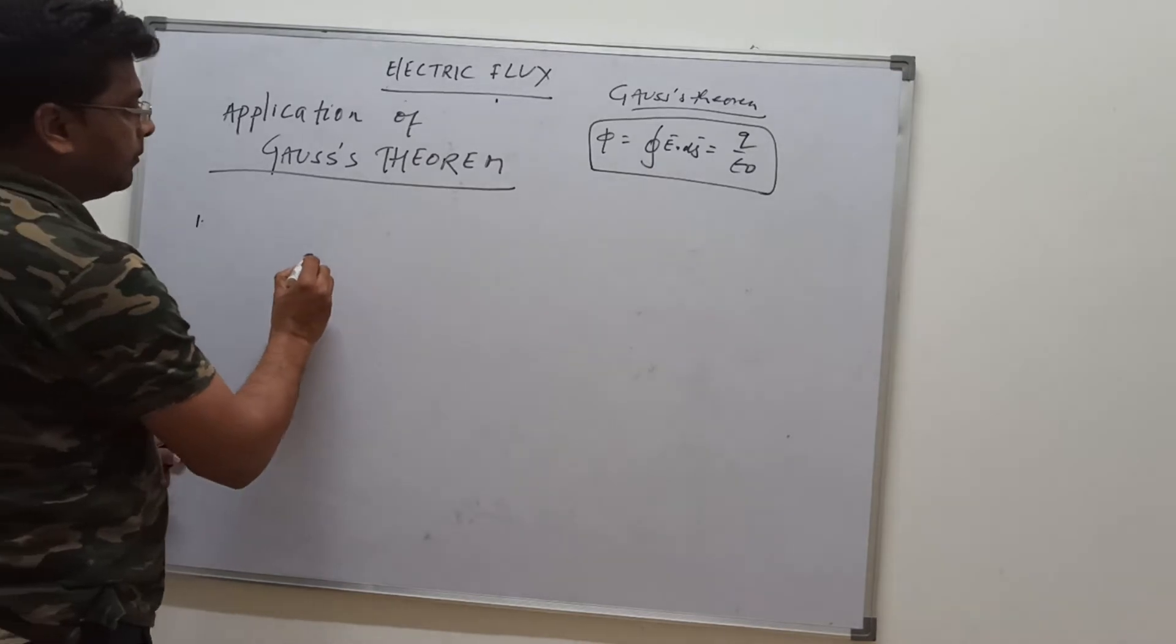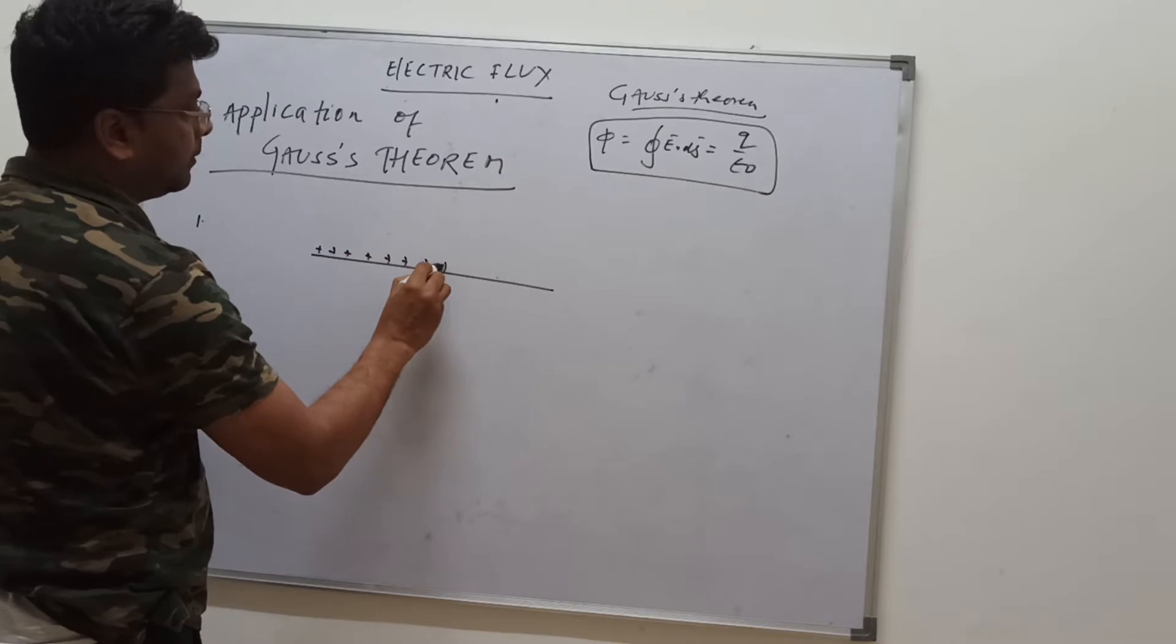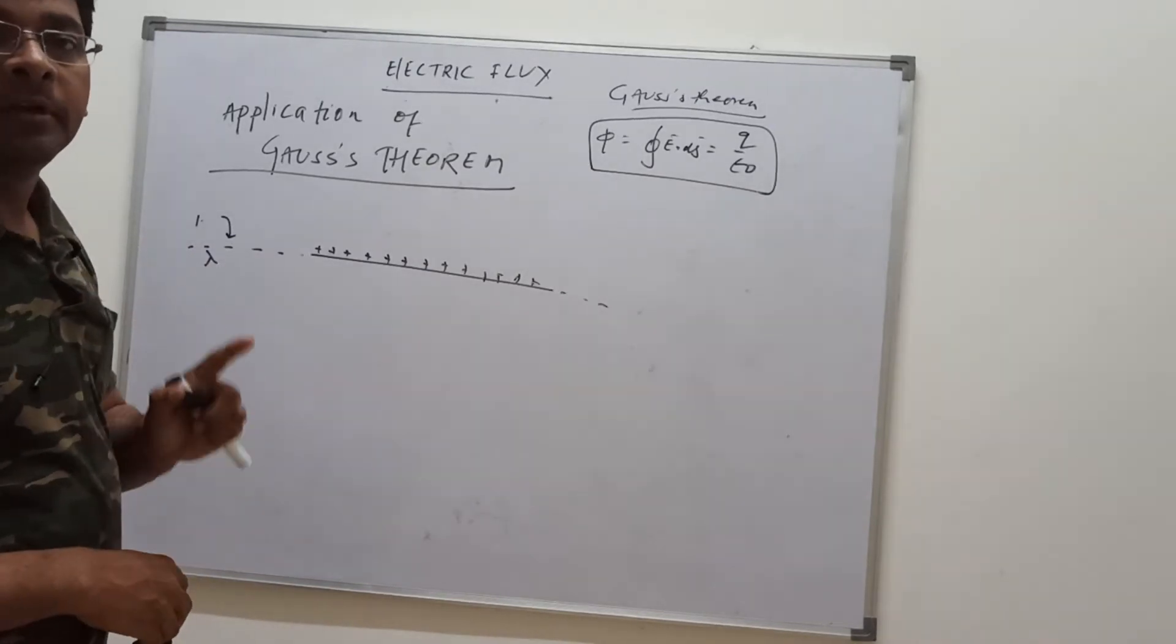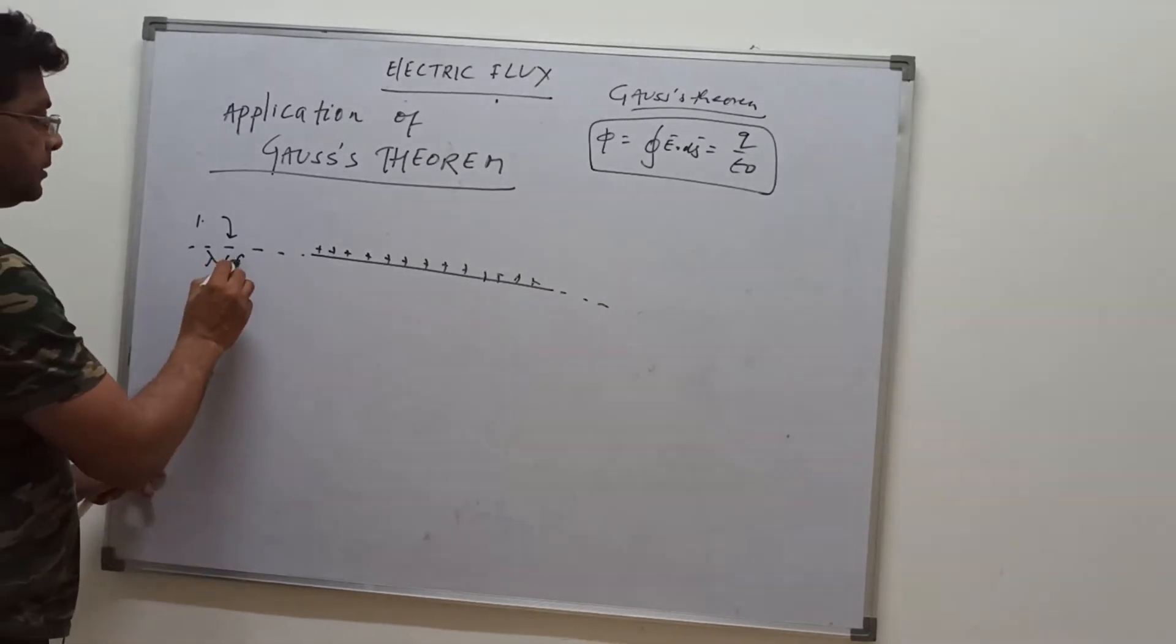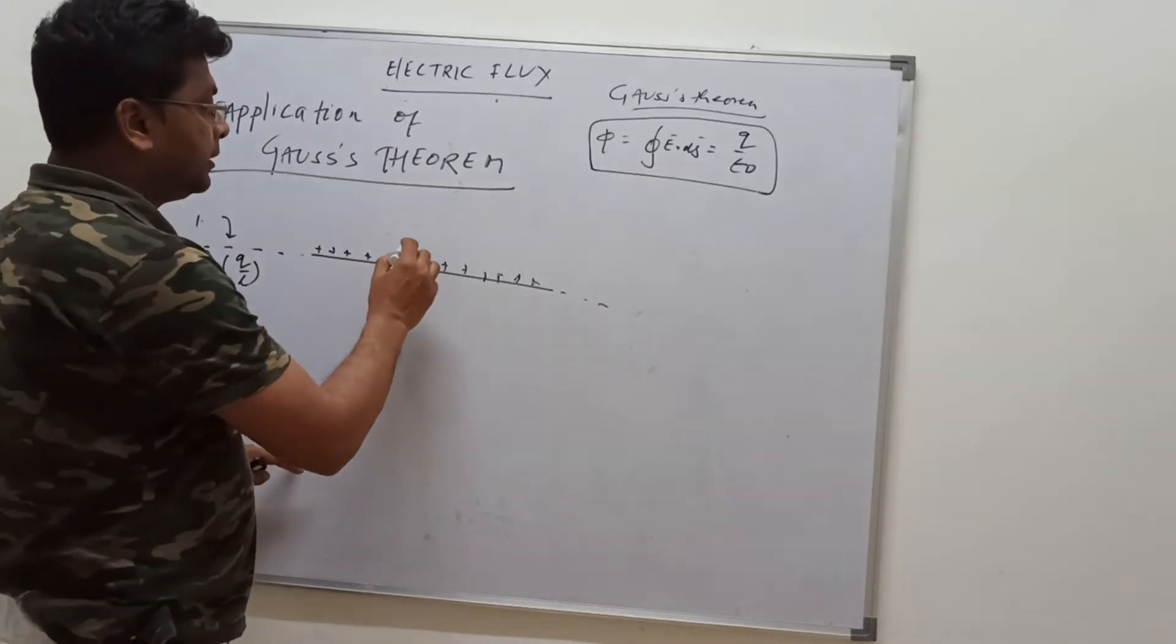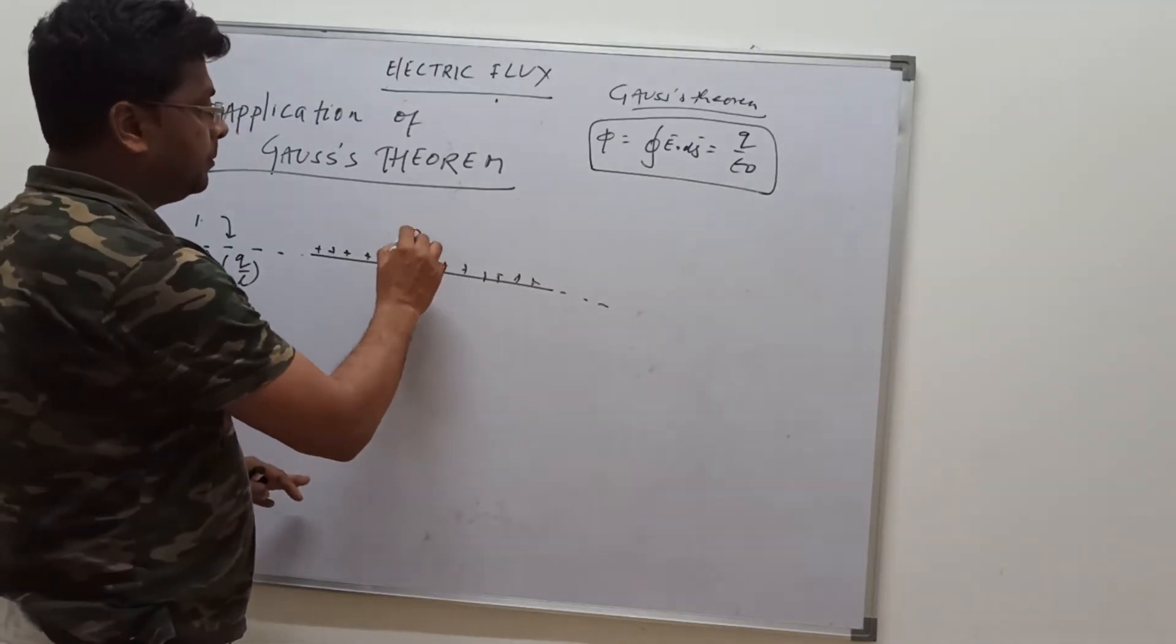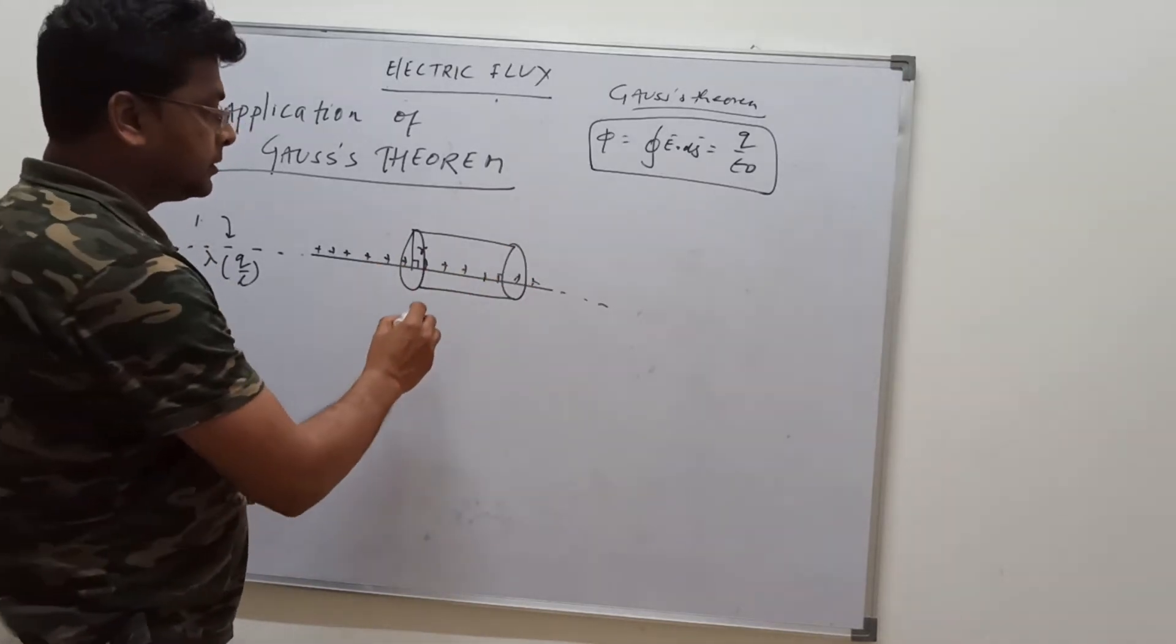We have an infinite wire which is positively charged and having lambda as linear charge density. Linear charge density means charge per unit length, and we are supposed to find the electric field at a perpendicular distance r from the wire. So just make a cylinder which can enclose some part of the wire.